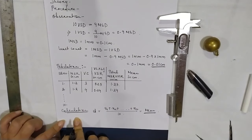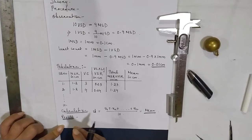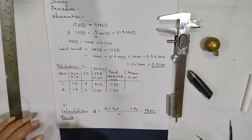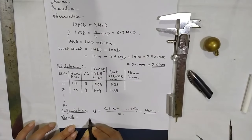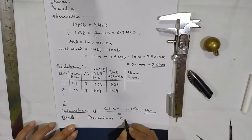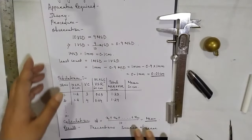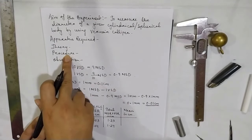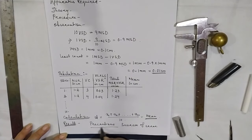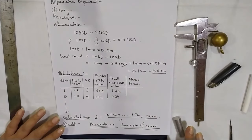After tabulation, we go to calculation — calculate the mean. After calculation, write the result: 'The diameter of the given cylinder was found to be [value].' Then after result, write precautions and sources of error. So the full format is: aim, apparatus required, theory, procedure, observation, tabulation, calculation, result, precautions, and sources of error.